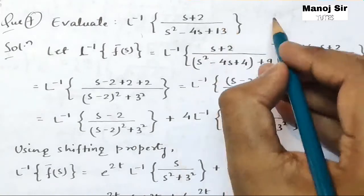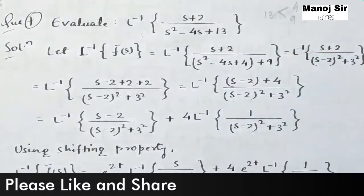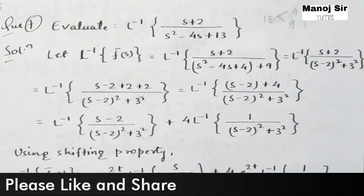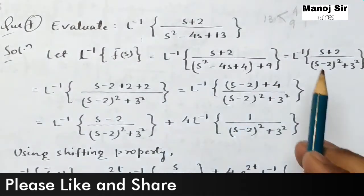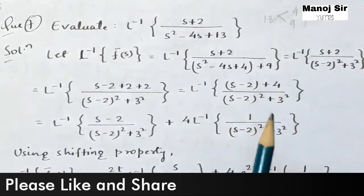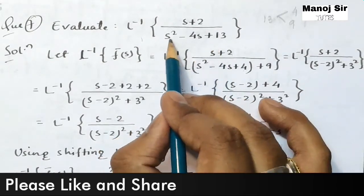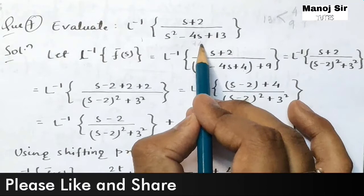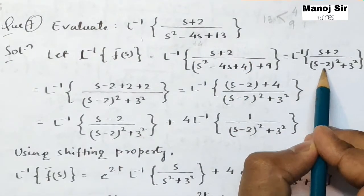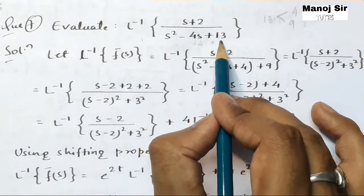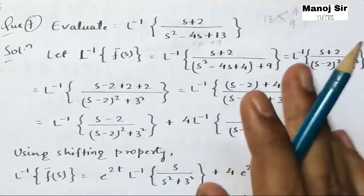We can divide 13 into two parts: 4 plus 9, which gives 13. We do this because s² − 4s + 4 forms (s − 2) whole square, and then adding the remaining 9 gives us the complete denominator. So 4 plus 9 equals 13.